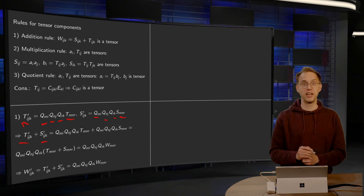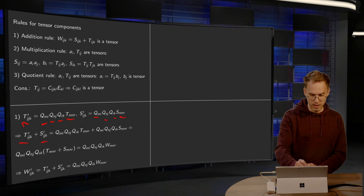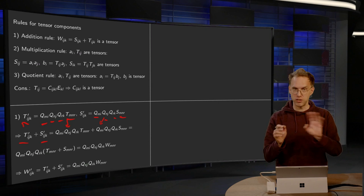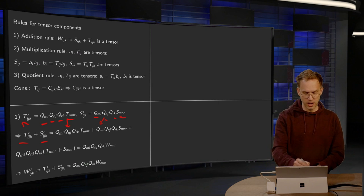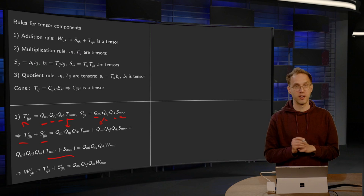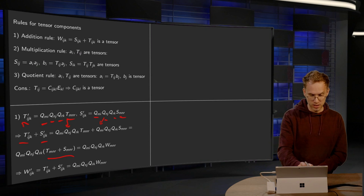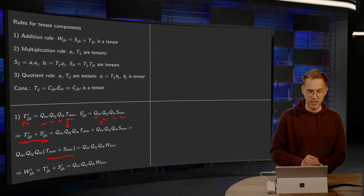Then we can compute the sum, Tijk prime plus Sijk prime. Here we just plug in this expression, and here we just plug in that expression. And then you see you can factor out all those Qs, they are just numbers, so you can take them in front, and you are left as TmNR plus SmNR.